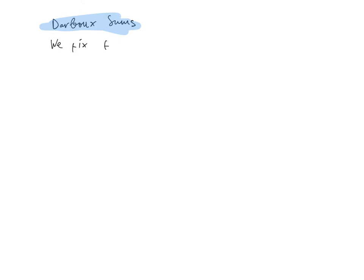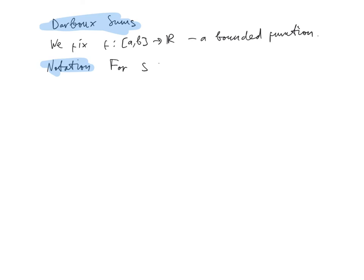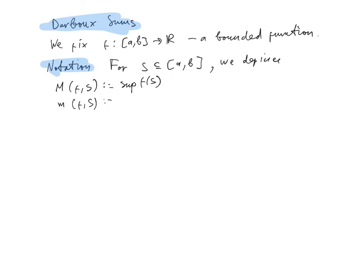Throughout our discussion, we fix a function f defined on the closed interval [a, b], taking values in the real numbers, which is bounded. Given a set S, a subset of [a, b], we define capital M(f, S) to be the supremum of the image of f on S, and little m(f, S) to be the infimum of the set of values that f takes on S.